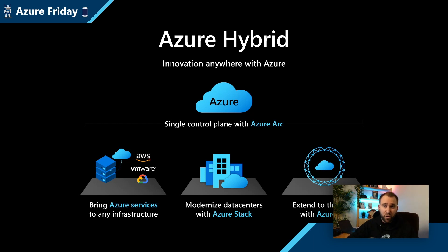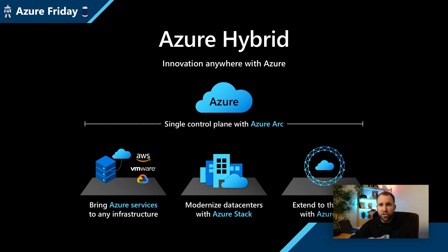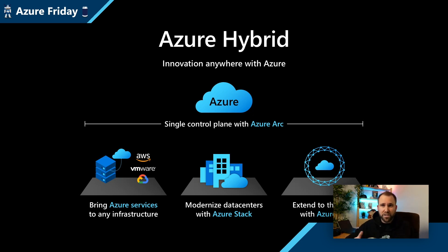We also offer the ability to deploy services and bring services to your location. We heard from many customers that they actually want to have Azure SQL, for example — they love it — but they cannot run it for every workload in an Azure region due to data sovereignty challenges or network latency challenges. So with Azure Arc, we allow them to bring Azure services to their specific location. We also offer our Azure Stack portfolio, which brings infrastructure into customer locations. And we have a very large set of IoT solutions for modern workloads as well.